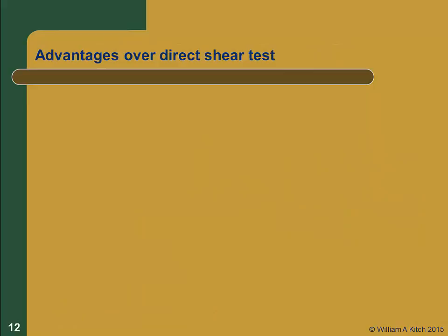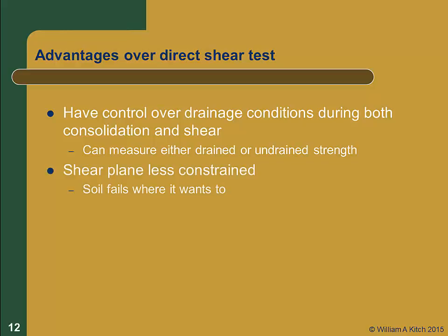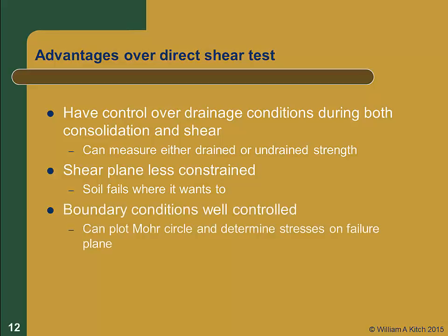Now that we've covered the basic triaxial tests, let's discuss some advantages this test has over the direct shear test. The triaxial testing procedure gives us control over drainage conditions during both consolidation and shear, allowing us to measure either the drained or undrained strength of a soil. The shear plane is not confined to a fixed plane as in the direct shear test, giving us a more realistic failure surface. The boundary conditions are controlled and known, allowing us to plot complete Mohr circles and determine stresses on the failure plane. Finally, we can measure both axial and volumetric strains, which allows us to measure the stress-strain properties of the soil.